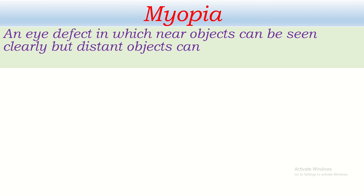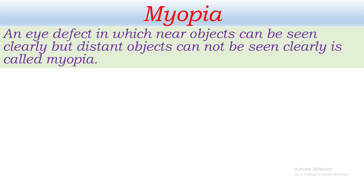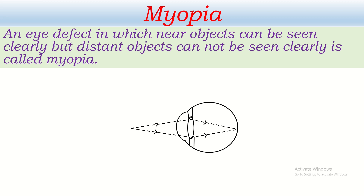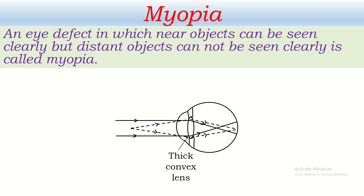Let's talk about myopia. An eye defect in which near objects can be seen clearly but distant objects cannot be seen clearly is called myopia. It can be represented diagrammatically: near objects can be seen clearly, so the light ray coming from a near object is focused on the retina. But the real problem is with distant objects — the parallel rays coming from distant objects are not focused on the retina. Because of the high power of the convex lens of the eye, it is focused in front of the retina.